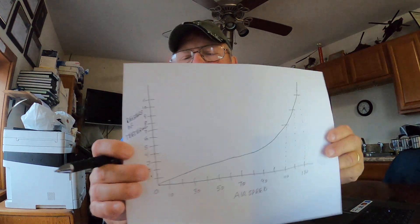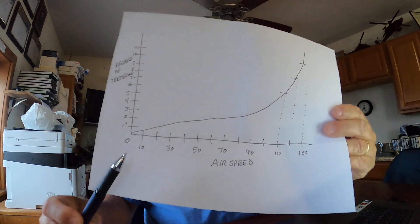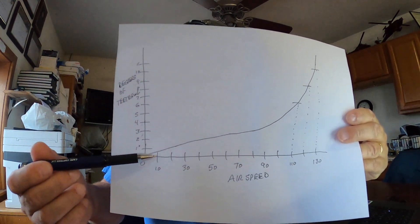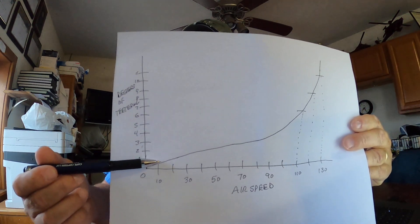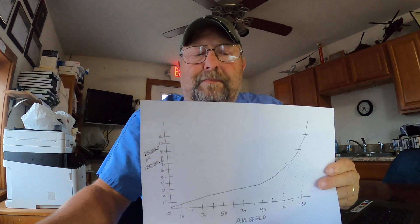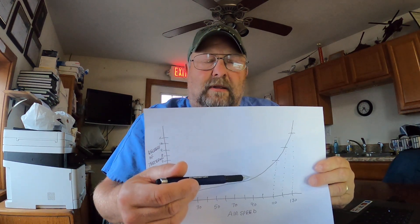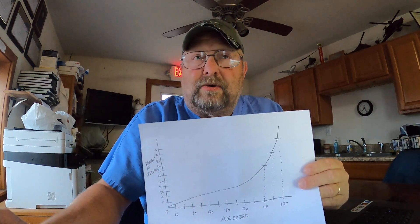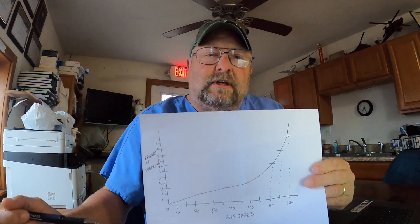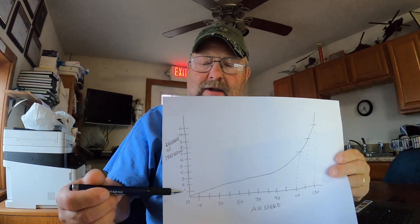If we plot this on a coordinate graph — and I made one here — airspeed on the x-axis and degrees of teetering on the y-axis — you see that at normal airspeeds from zero up to about 70 or 80 knots, you have only about two to three degrees of teetering. But as we increase airspeed, those two effects — exponential lift increase on the advancing side, exponential decrease plus loss of lifting surface on the retreating side — cause the line to become quite steep on the upswing.